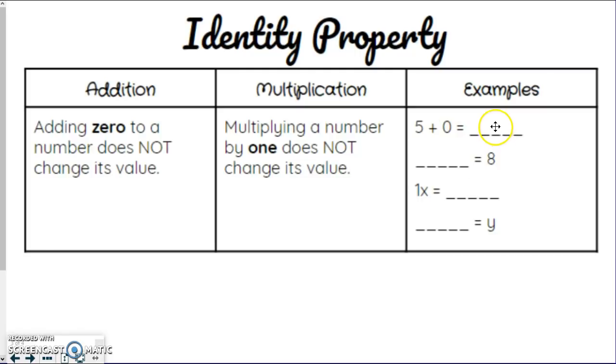So let's look at this one. 5 plus 0, an equivalent expression for that would just be 5, right? That's using that identity property for addition. Adding 0 to a number does not change it. It stays 5. Now, they just gave us 8 here, so we could use either property. I'm going to choose to use the identity property for multiplication, multiplying it by 1. But if you wanted to use the addition one, you could do that as well. And you can even flip the order. You could do 8 times 1 or 8 plus 0.